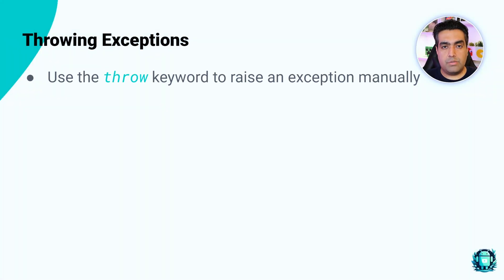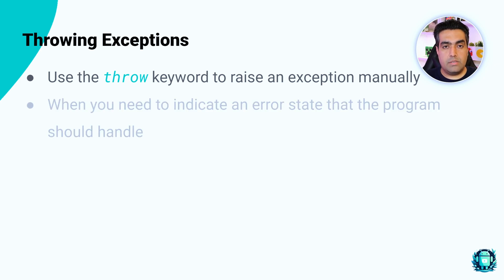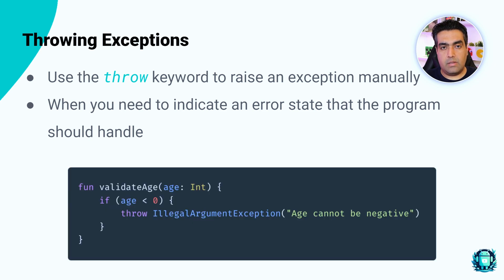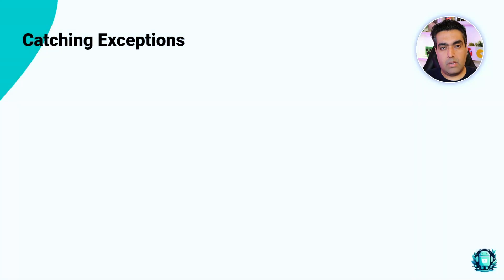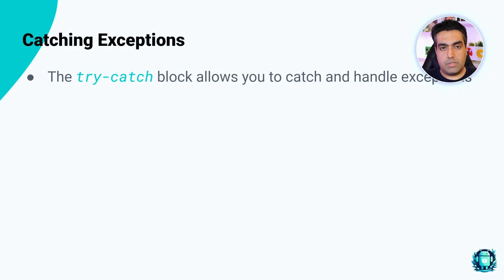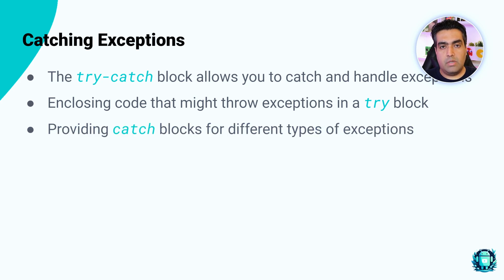In Kotlin, we use the throw keyword to raise an exception manually. This is useful when you need to indicate an error state that the program should handle, such as throwing an IllegalArgumentException when a method receives invalid arguments. The try-catch block in Kotlin allows you to catch and handle exceptions. By enclosing code that might throw an exception in a try block and providing catch blocks for different types of exceptions, you can manage errors without crashing your application.